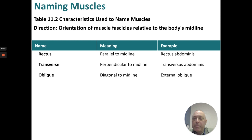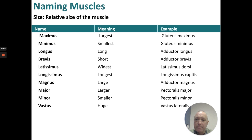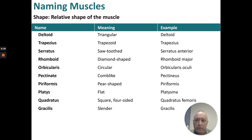Characteristics used to name muscles: rectus is parallel to the midline, like the rectus abdominis; transverse is perpendicular to the midline, like the transversus abdominis; obliques are diagonal to the midline, like the external oblique. Relative size terms: maximus (largest), minimus (smallest), longus (long), brevis (short), latissimus (wide), longissimus (long), magnus (large), major (larger), minor (smaller), vastus (huge). Shape terms: deltoid (triangular), trapezius (trapezoid), serratus (sawtoothed), rhomboid (diamond-shaped), orbicularis (circular), pectinate (comb-like), piriformis (pear-shaped), platys (flat), quadratus (square/four-sided), gracilis (slender).